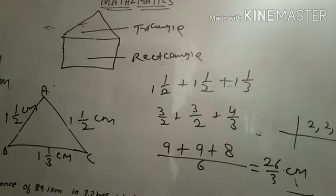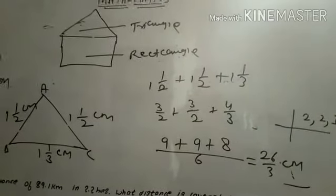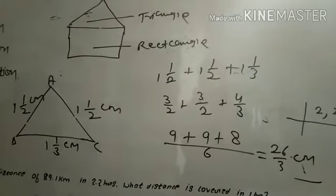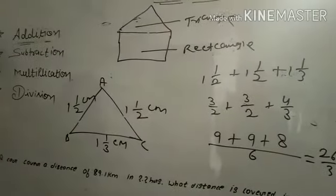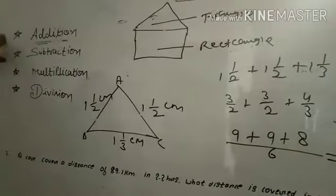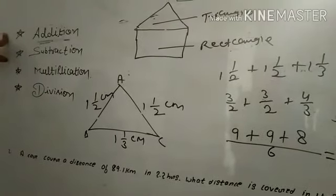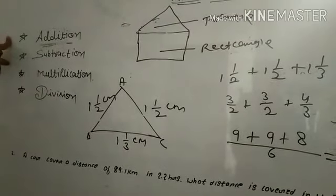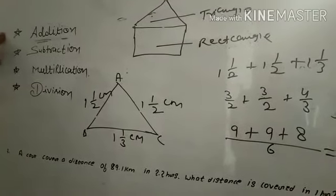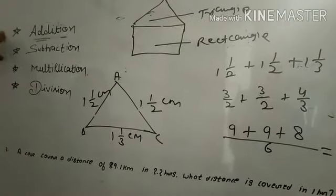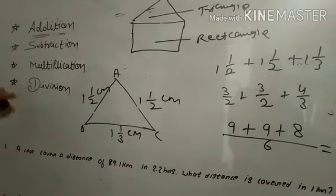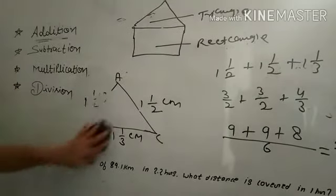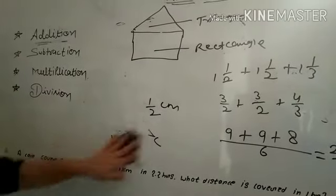So we have discussed the types of fractions - how to add them, how to change mixed fractions into improper fractions, and how to change improper fractions into mixed fractions. With this you can easily do addition. Now comes subtraction.